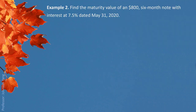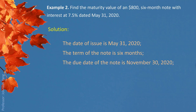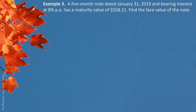Example 2: Find the maturity value of an $800 six-month note with interest at 7.5%, dated May 31, 2020. The issue date is May 31, 2020, and the term is six months, so the maturity date is November 30, 2020. The interest period is 183 days between the issue date and the maturity date. Plugging all information into the formula gives a maturity value of $830.08.